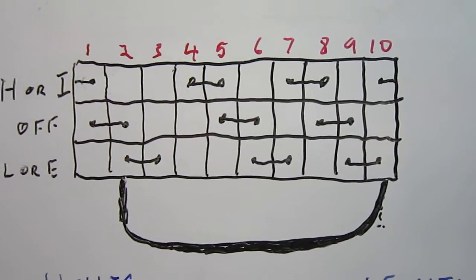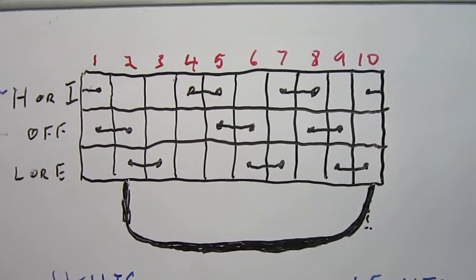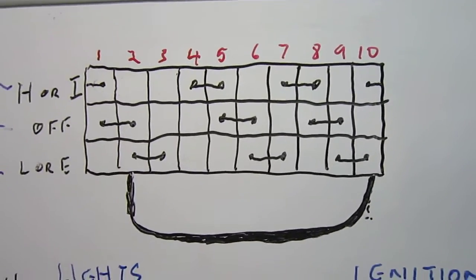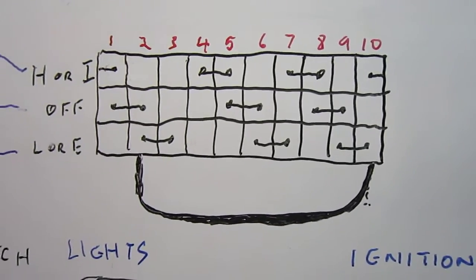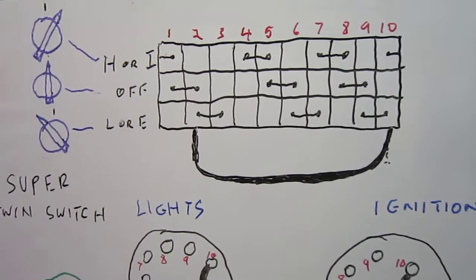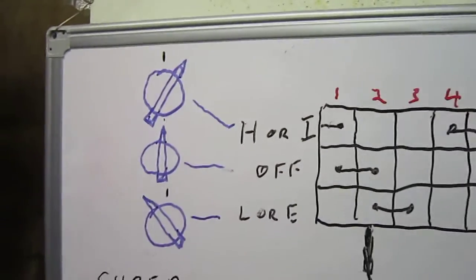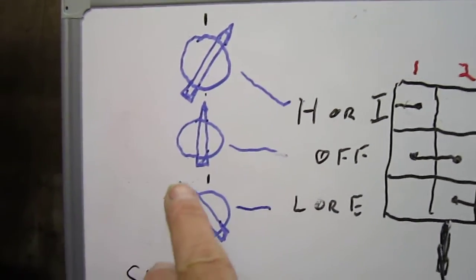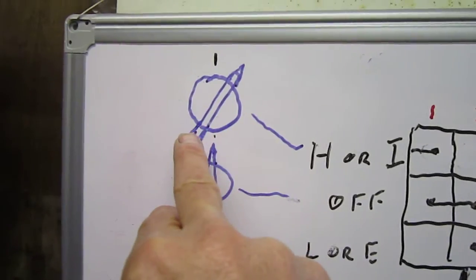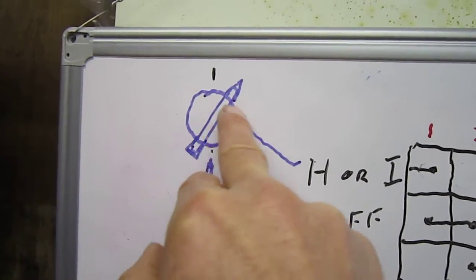So this is where you'd have to watch out, because if you had a later wiring loom with a different shorting link inside, you'd have all sorts of problems trying to get everything to work. And the other thing, especially if you're new to Bantams, people look at the switches and they think that it's basically a pointer on top of the switch.